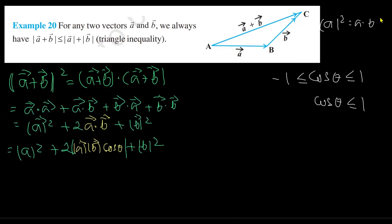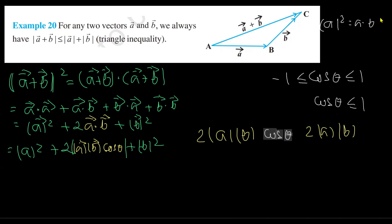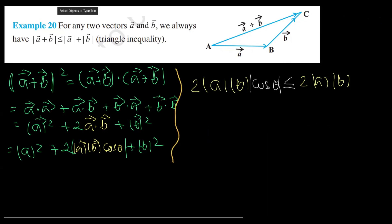So let's say we begin by writing 2|a||b| as equal to itself. But you know that if we multiply with some number which is less than or equal to 1 — a proper fraction greater than 0 but less than or equal to 1 — then multiplying on the left hand side will satisfy the inequality. So 2|a||b||cosθ| ≤ 2|a||b|.